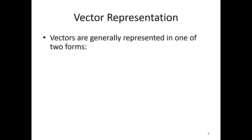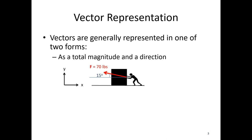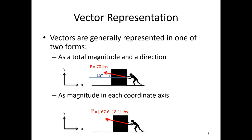For vector representation, we're generally going to have one of two forms. Often we're going to start our problems with a magnitude and direction — so we might see a force on a box with a total magnitude of 70 pounds and a direction 15 degrees above horizontal. We're also going to have the component form, which is a magnitude in each coordinate direction, such as negative 67.6 pounds in the x direction and positive 18.1 pounds in the y direction.